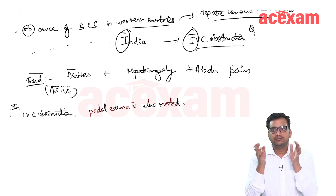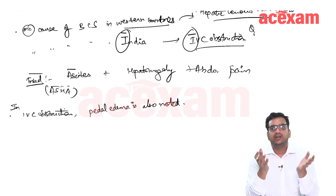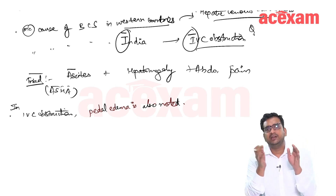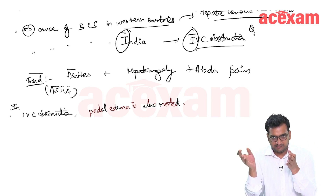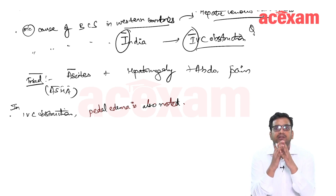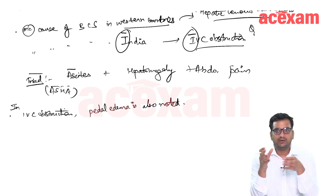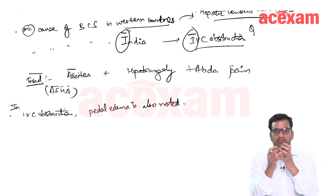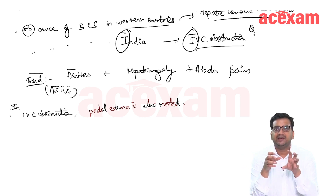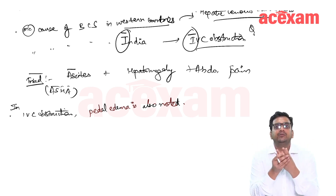The caudate lobe drains directly into the IVC, whereas the other segments drain through the right hepatic vein, left hepatic vein, and middle hepatic vein. If there is hepatic venous obstruction, the whole liver will be congested and, in long-standing obstruction, it will be atrophied. But the caudate lobe drains directly into the IVC, so it will not be affected — and rather than being affected, there will be a compensatory hypertrophy noted in the caudate lobe.